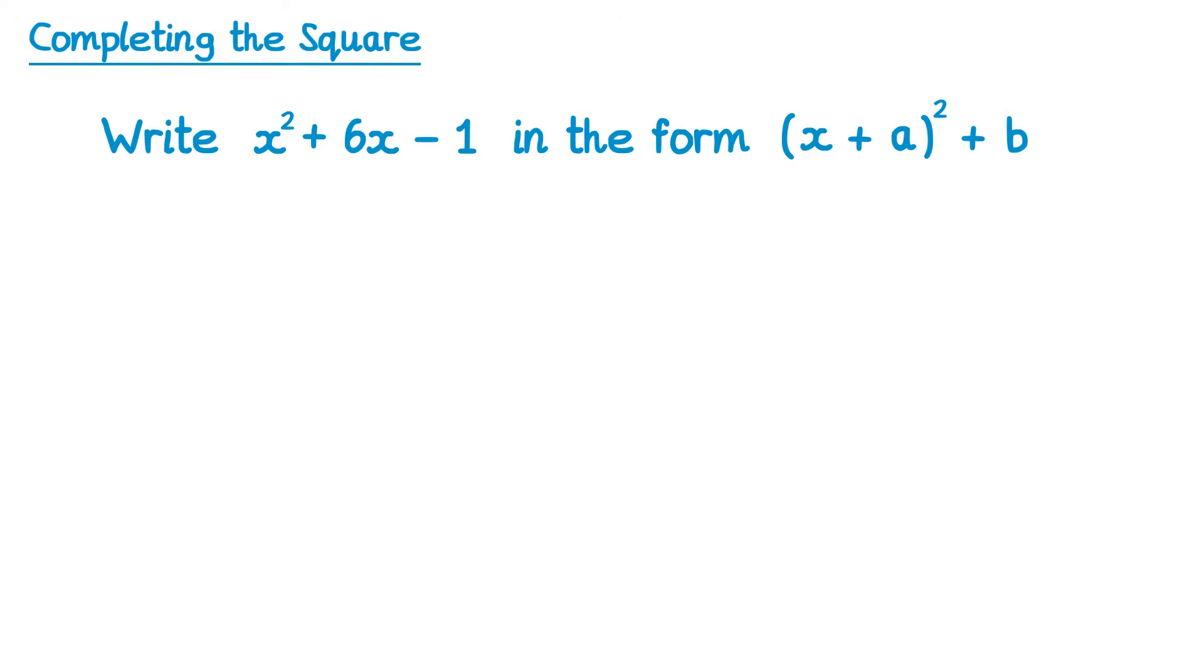Let's try another question now, but this time write the steps down as we go. So we've got x squared plus 6x minus 1, and we need to write it in the completed square form. Step 1, write the question down, and also a bracket squared. So the question, x squared plus 6x minus 1, equals a bracket squared.